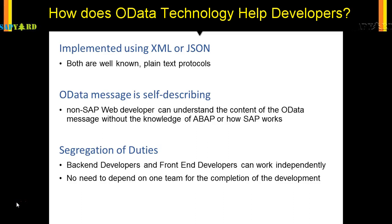The OData message is self-describing. This means any non-SAP web developer can understand the content of an OData message even without knowledge of ABAP or SAP. The front-end developer working on the client side can pull data from SAP without knowing how SAP works or what programming language it uses — he can treat it as a black box.